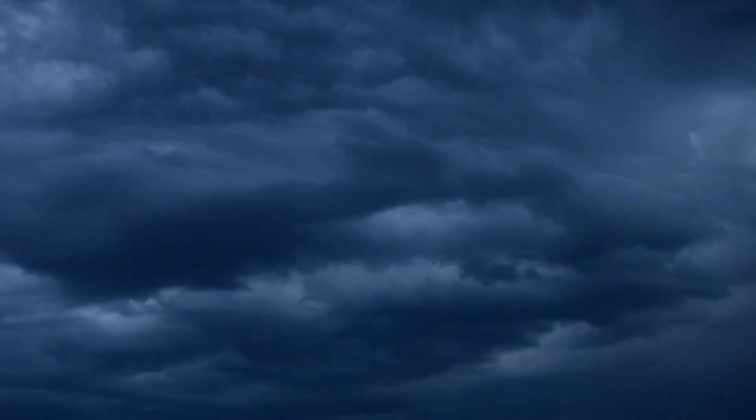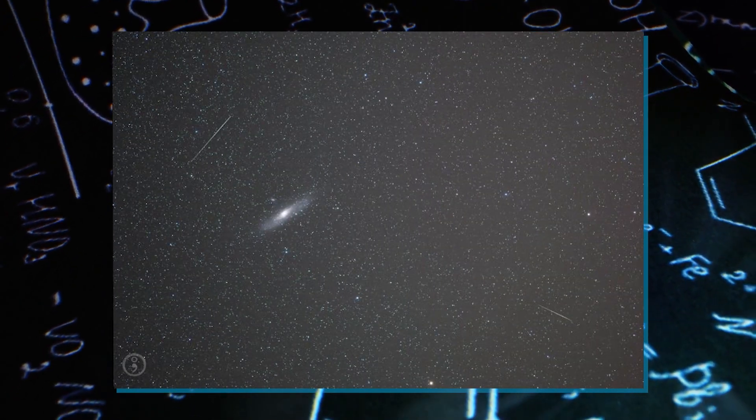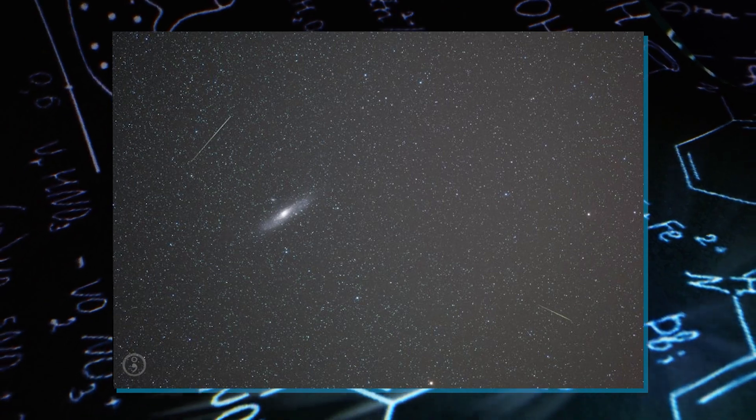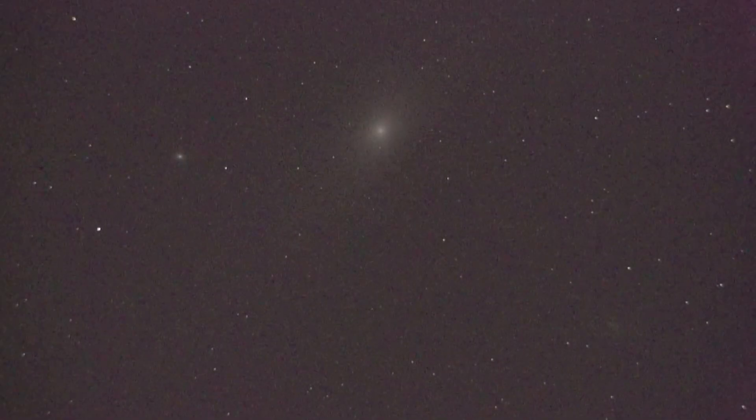People had been observing Andromeda for a long time, even back in the 10th century. They saw it as a tiny cloud in the sky. You can actually see Andromeda from Earth without a telescope if you know where to look. It's like a faint, cloudy spot.